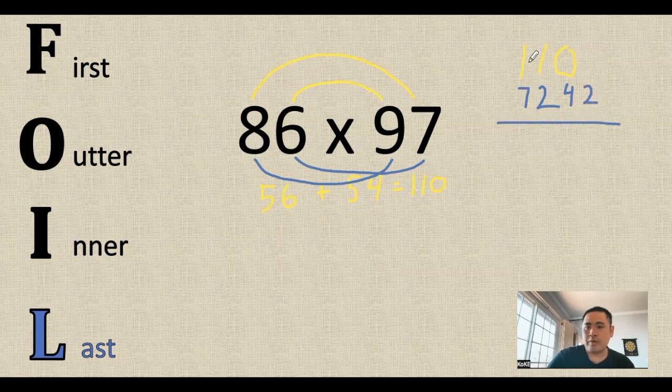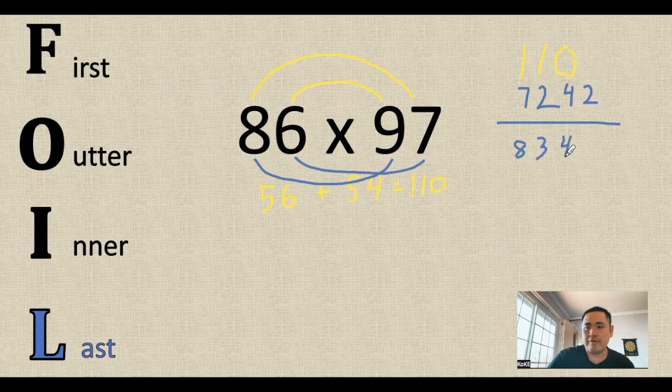And then after we do that, we can just add the numbers vertically. So when we do that, we get a total of 8,342.